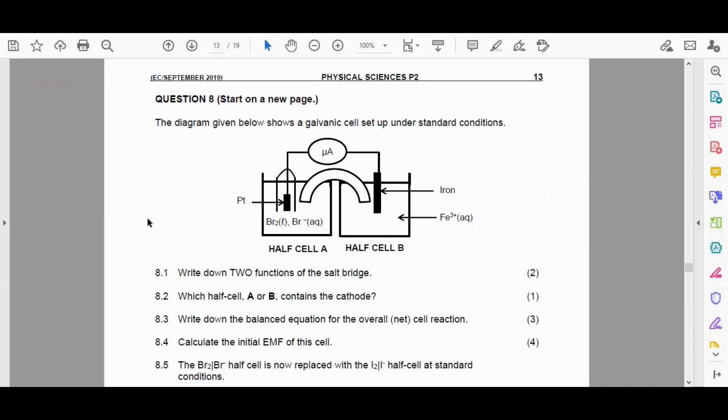In 8.2, which half cell A or B contains the cathode? Now, usually when it comes to this, we need to look at our electrodes, and judging on the values of the cell potential values, can we decide which half cell A or B would be our cathode?